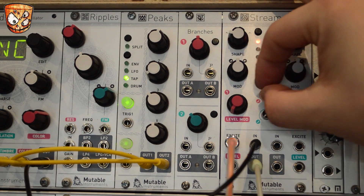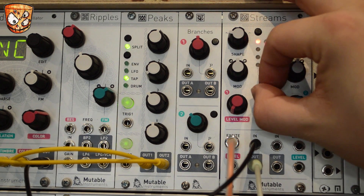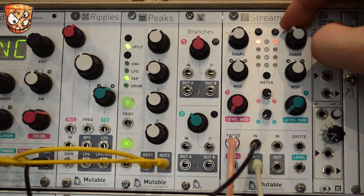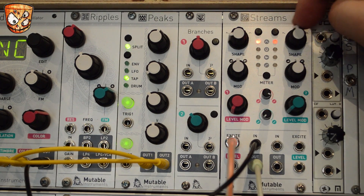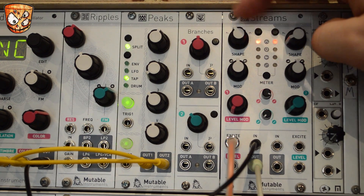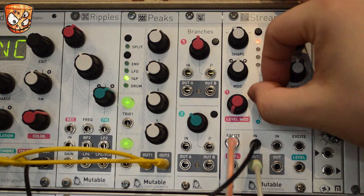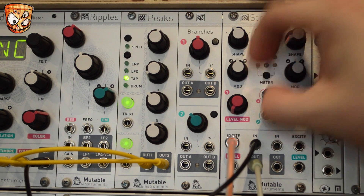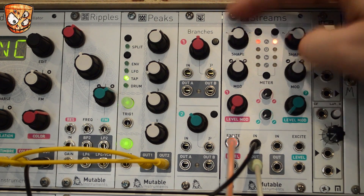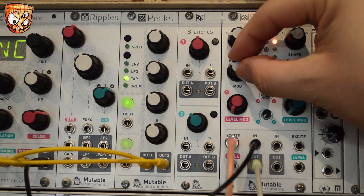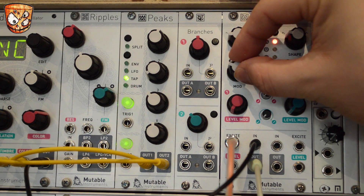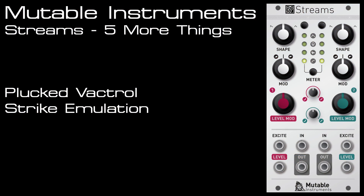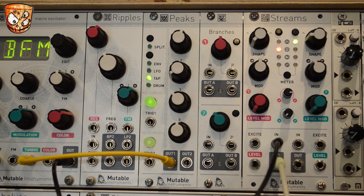We can change the curve with the exponential to linear knob. There's still the filter modulation and the option to offset the VCA levels as well.